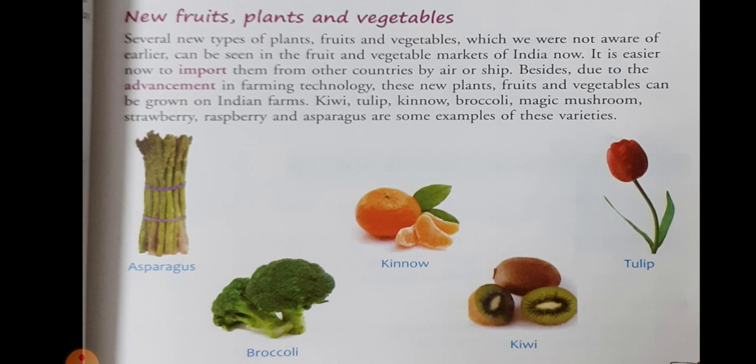Next topic is new fruits, plants, and vegetables. Students, several new types of plants, fruits, and vegetables which we were not aware of earlier can be seen in the fruit and vegetable markets of India now. It is easier now to import them from other countries by air or ship. And besides, due to the advancement in farming technology, these new plants, fruits, and vegetables can be grown on Indian farms.